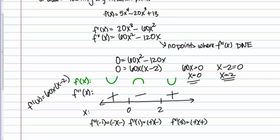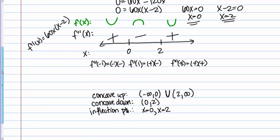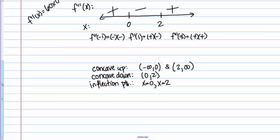It's continuous for all real numbers, so 0 and 2 are in its domain, so that's good. I can call them inflection points. Inflection points at x equals 0 and x equals 2.